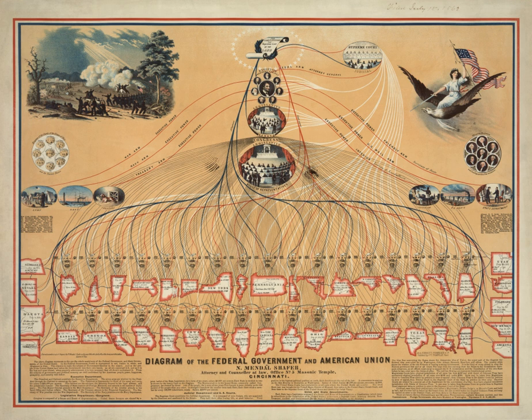In addition to the 435 voting members, there are six non-voting members, consisting of five delegates and one resident commissioner. There is one delegate each from the District of Columbia, Guam, the Virgin Islands, American Samoa, and the Commonwealth of the Northern Mariana Islands, and the resident commissioner from Puerto Rico.